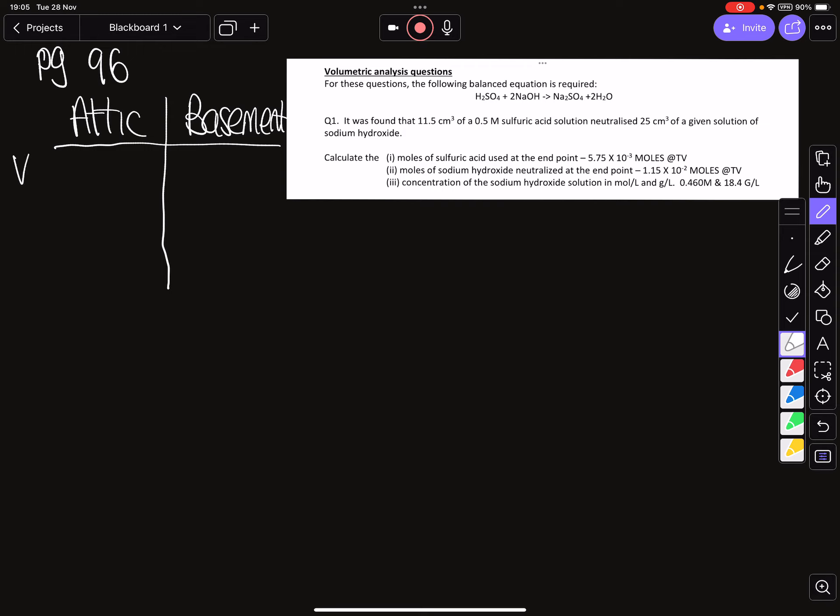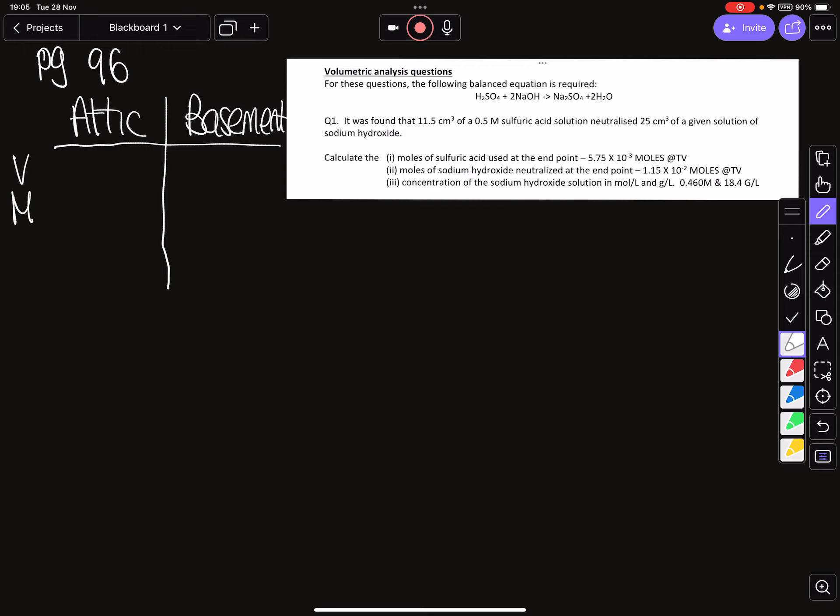The reason we're doing this is because when we go to redox we don't have acid and base. So if we can always think of things in the context of what do we put in the attic, what do we put in the basement, we're always looking for a volume, a concentration in moles per liter, and the ratio from our equation.